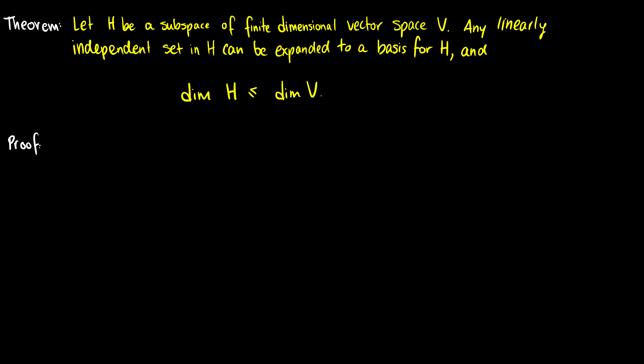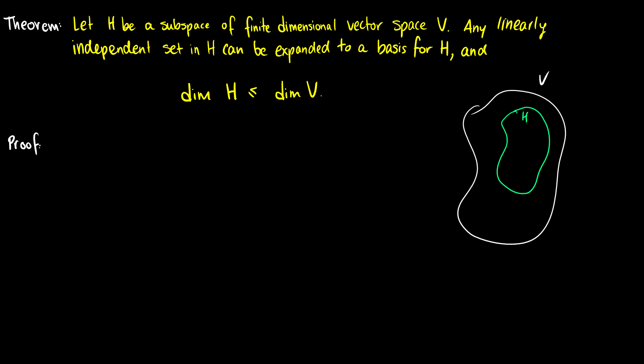Here's the theorem: if H is a subspace of vector space V, then any linearly independent set in H can be expanded to a basis for H, and the dimension of H is less than or equal to the dimension of V. So if we take a vector space V and some subspace H, and we have a set of linearly independent vectors in H, we can expand that set until it covers all of H, and we're never going to get a dimension bigger than V.